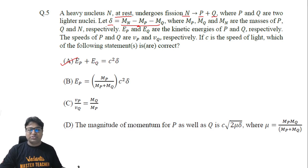Now option B says EP equals some value. Let's understand this: the two daughter fragments P and Q will have the same momentum. If they have the same momentum, then √(2MP×EP) must be the same as √(2MQ×EQ).